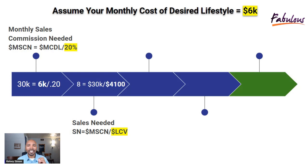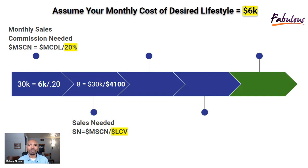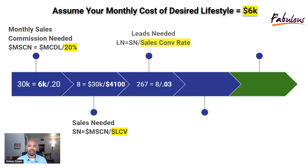In this situation, we need eight sales in order to provide us with at least $30,000. I rounded up — it's more like 7.3 — but I rounded it up to eight, so we're going to be over $30,000 per month, and that's going to allow us to get $6,000 in cash flow by taking 20% of that $30,000. Now we need to calculate another formula because we have to think about where the sales come from. Sales are going to come from leads, so we need to know how many leads we need in order to get eight sales that will allow us to have $30,000 in monthly sales commission.